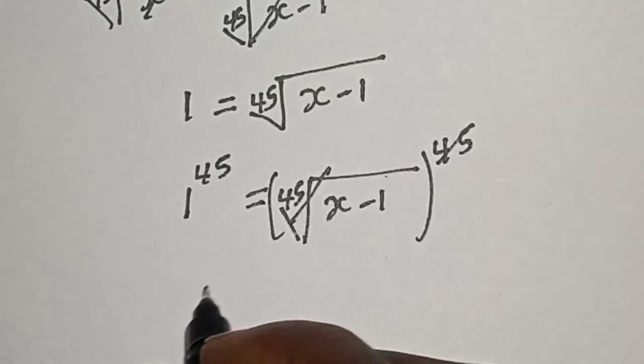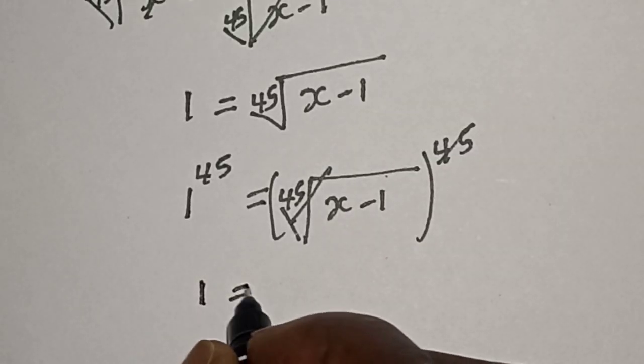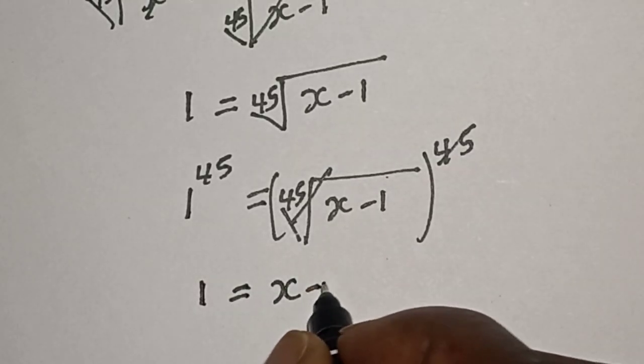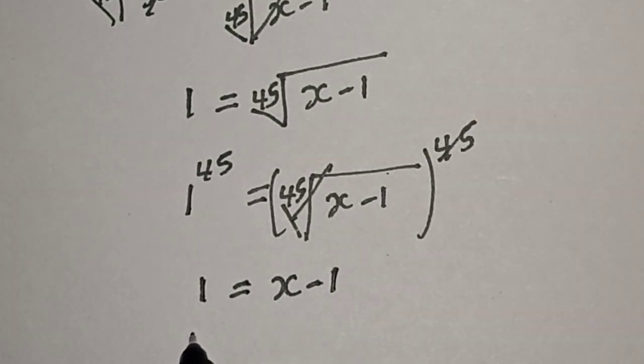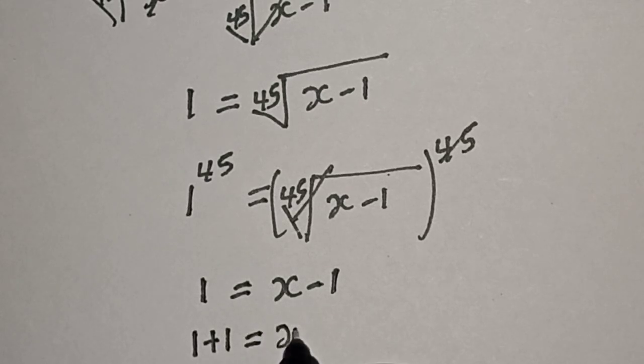1 raised to the power of 45 is 1. This is equal to x minus 1. Then we have 1 plus 1 is equal to x.